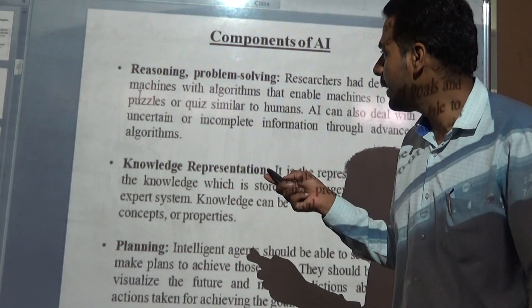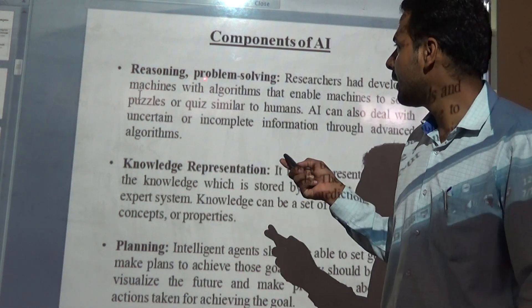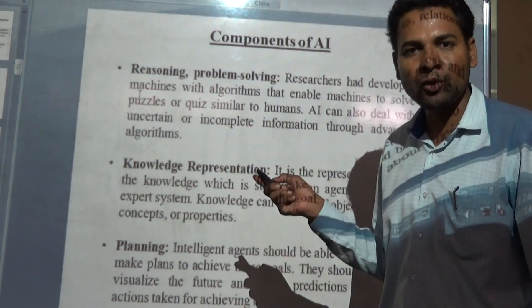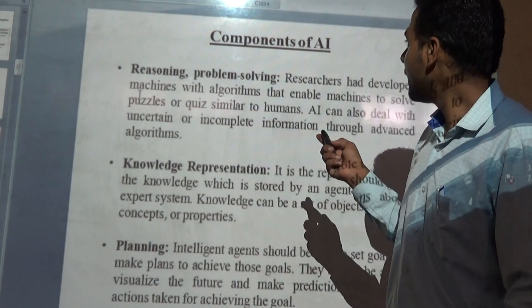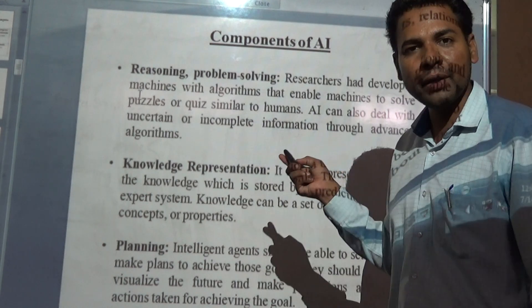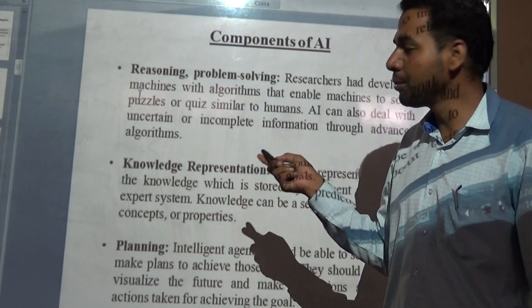Human always has the ability of reasoning and problem solving, so it must be a component of AI. AI should do this.